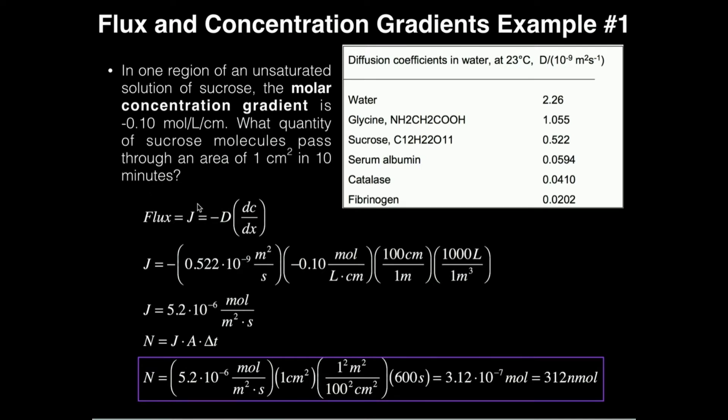So how do we do this? Well, first of all, we have our flux equation. That's normally the first step. Flux j is equal to negative d times the concentration gradient.